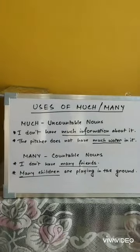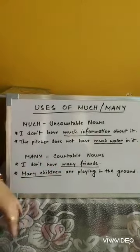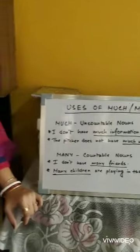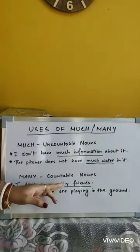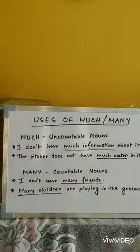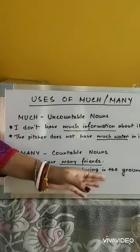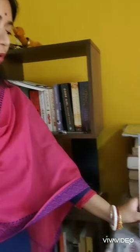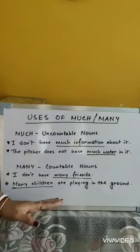Many is used with countable nouns. For example: I don't have many friends. Friends can be counted — I have one friend, two friends — so we use many before it. Another example: many children are playing in the ground. Children is already the plural of child, so we use many before it. Now I want you to find more countable and uncountable nouns and use the correct form of much or many with them.